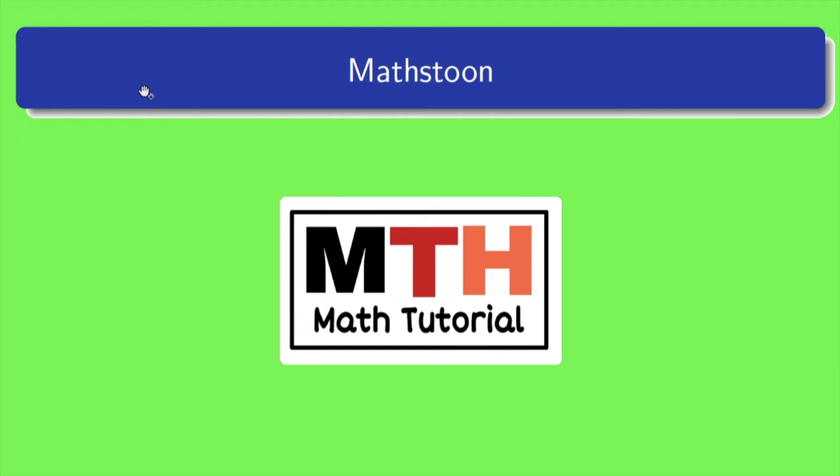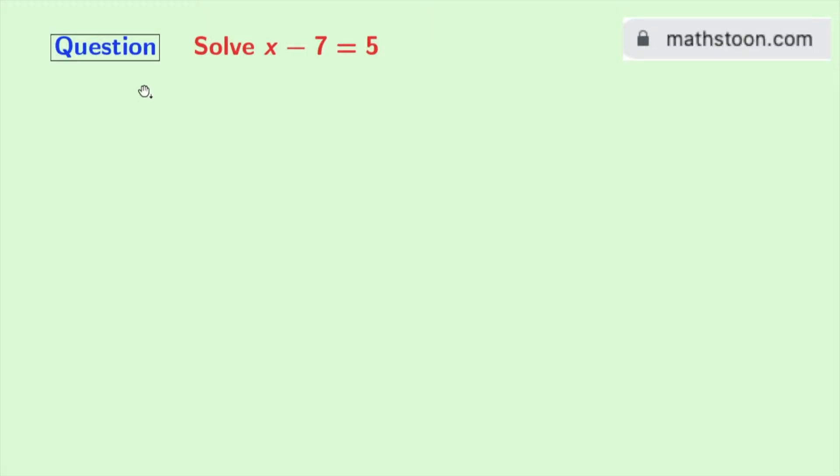Hi friends, welcome to Mathstoon. In today's video we will learn to solve a linear equation: x minus 7 is equal to 5. To know more, please visit mathstoon.com or check the link given in the description box.